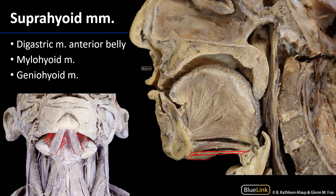Going along the midline we can see the hyoid bone, and we also have the geniohyoid, which is best seen in the sagittal view. There are two sets of spines: superior spines and inferior spines. The inferior spines are the attachment sites for the geniohyoid muscle. The superior spines are for the genioglossus muscle, which is a fan-shaped extrinsic muscle of the tongue.